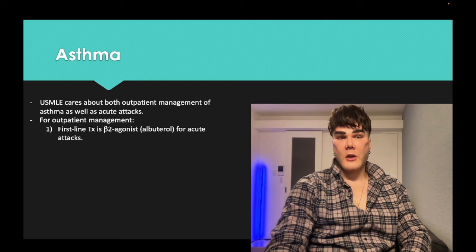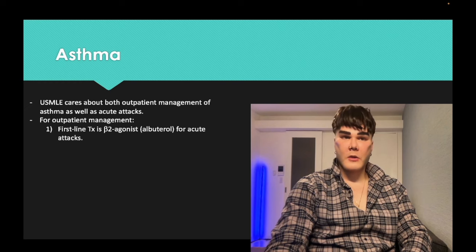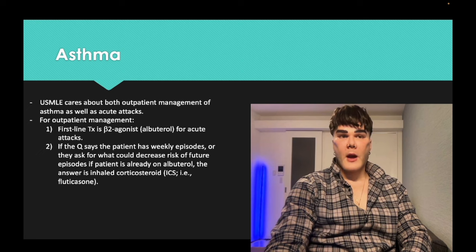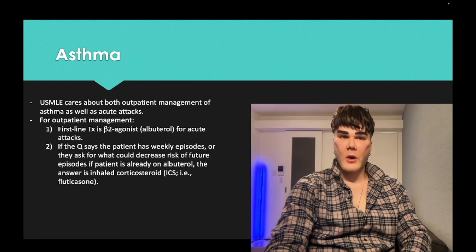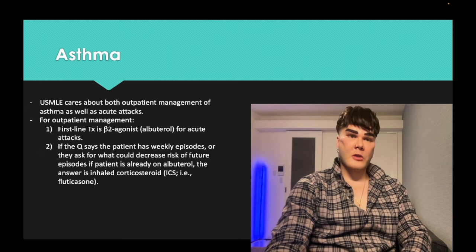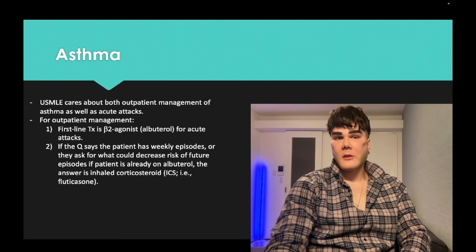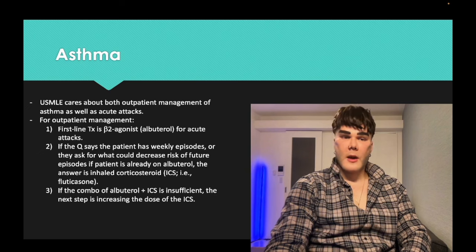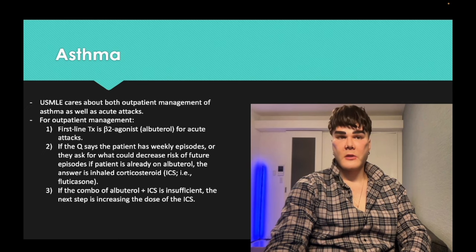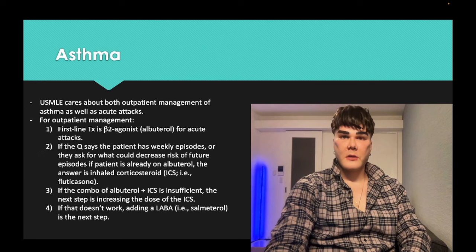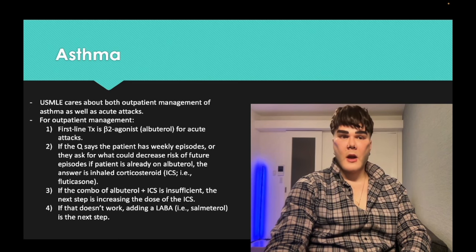For an acute attack, give a beta-2 agonist inhaler. Outpatient: if a patient on albuterol is still getting weekly episodes, add an inhaled corticosteroid like fluticasone. If the combination of beta-2 agonist plus ICS is insufficient, increase the ICS dose. If still insufficient, add a long-acting beta-2 agonist like salmeterol. Those are the first four steps.